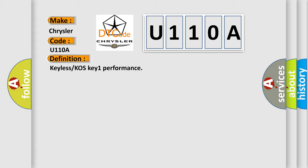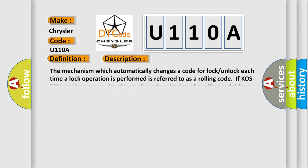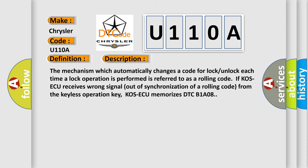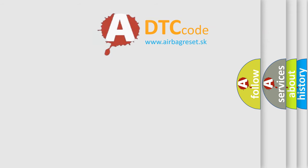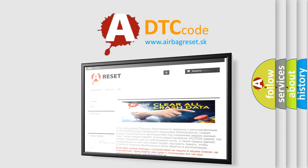Here is a short description of this DTC code. The mechanism which automatically changes a code for lock/unlock each time a lock operation is performed is referred to as a rolling code. If COS AQ receives a wrong signal out of synchronization of a rolling code from the keyless operation key, COS AQ memorizes DTC V1A08. This diagnostic error occurs most often in these cases: rolling code out of synchronization, malfunction of the keyless operation key, or malfunction of the COS AQ. Thank you for your attention and stay tuned for the next video. Bye.